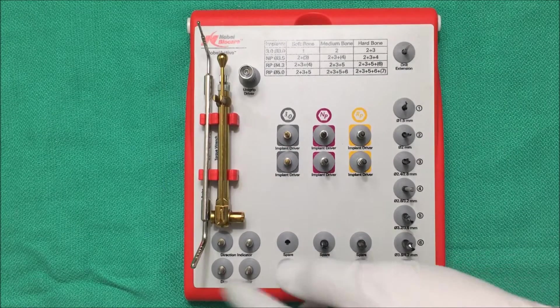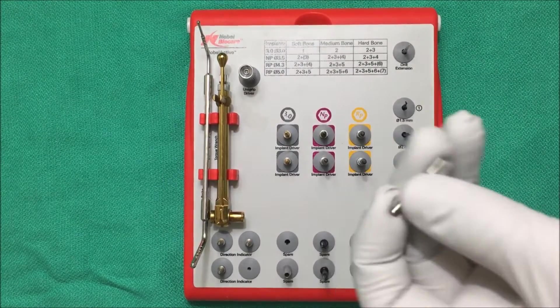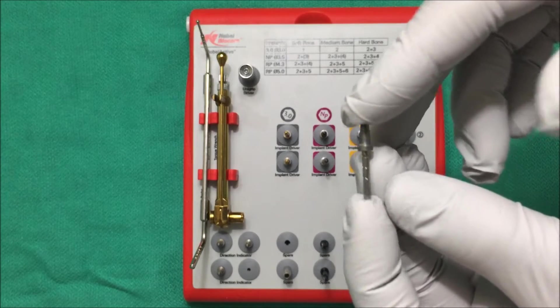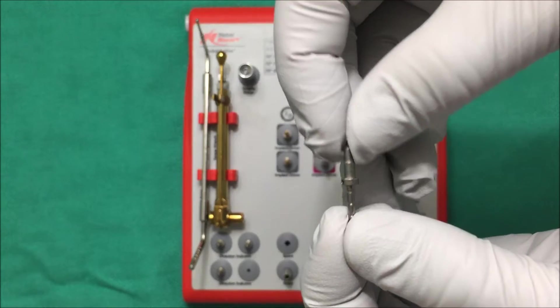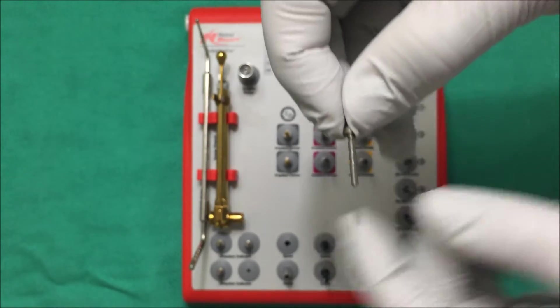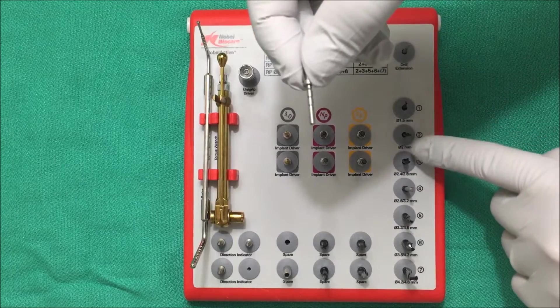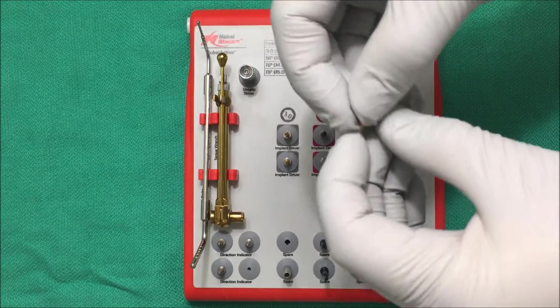So over here you have your paralleling pins. By inserting these into the osteotomy site they help you evaluate the proposed angle of implant placement. You'll see they have a narrow end and a wider end. This narrow end can be used with this second drill right here. Once you go past the second drill when you use the third drill you'll have to switch to this wider end right here.